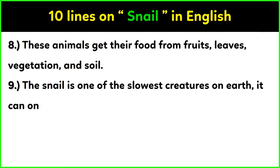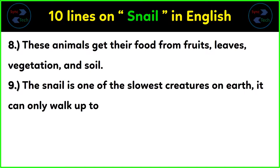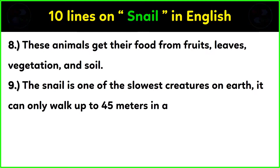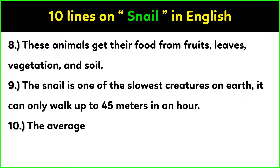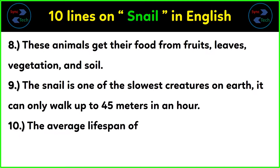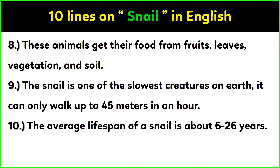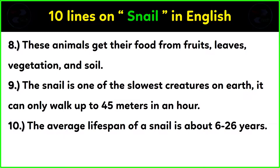The snail is one of the slowest creatures on earth. It can only walk up to 45 meters in an hour. The average lifespan of a snail is about 6 to 26 years.